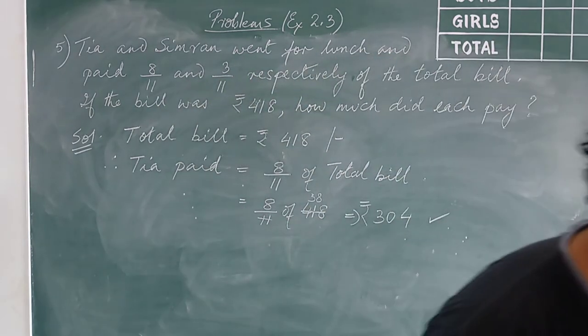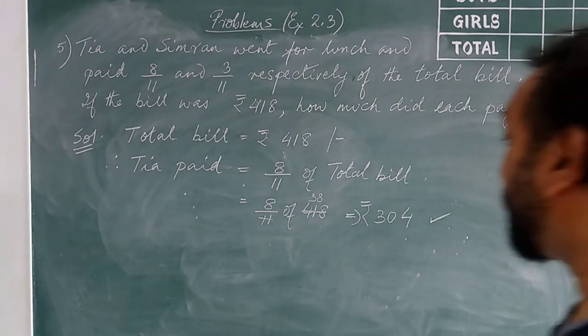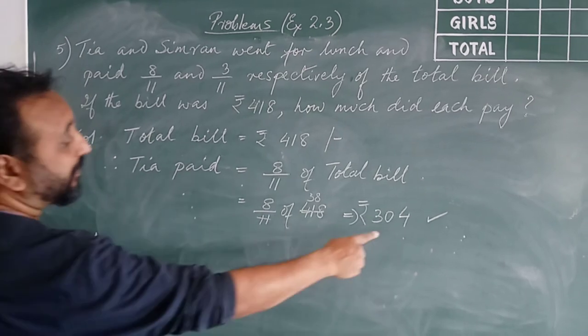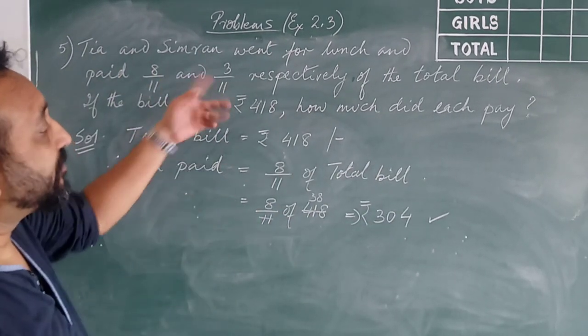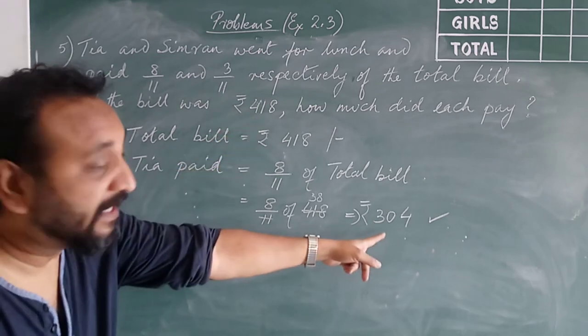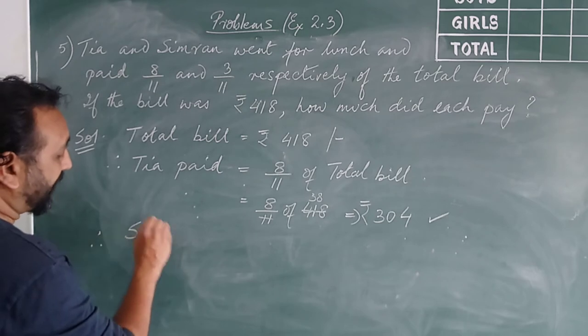You need to see if that amount is correct. 304, yes. Therefore, if this was paid by Tia, Simran you can find out without using the fraction, total minus this, you will get all. Let us stick to fractions.